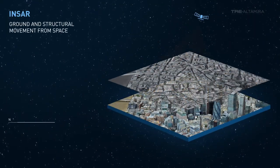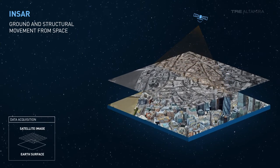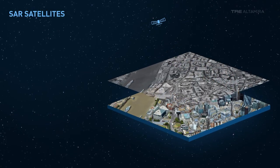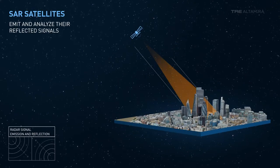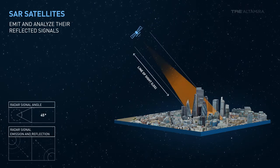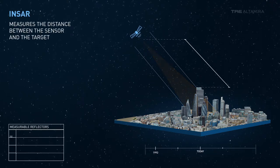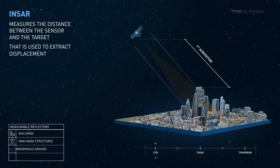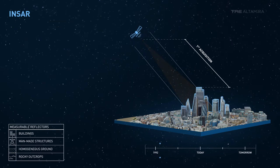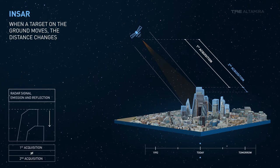Interferometric Synthetic Aperture Radar, InSAR, is a satellite-based technology used to measure ground and structural movement from space. SAR satellites emit continuous radar signals towards the Earth's surface along the radar beam's line of sight and analyze the reflected signals. InSAR measures the distance between the sensor and the target, and the difference in this between subsequent image acquisitions is used to measure movement. When a target on the ground moves, the distance between the sensor and the target changes.